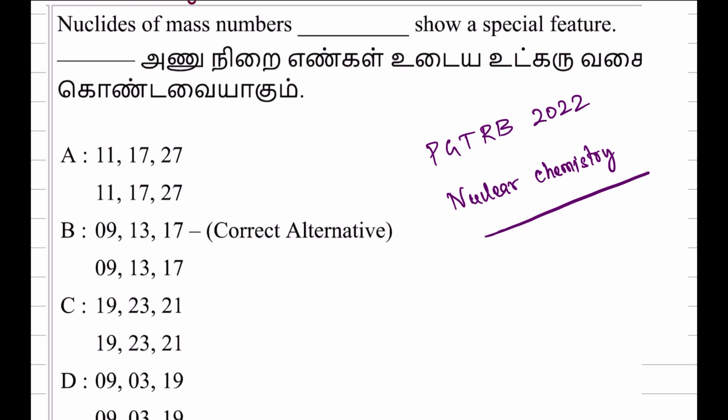In this video, we will solve a question about PGTRP chemistry in 2022. We will ask a question about the nucleides of mass number 9, 13, 17 and their special feature. If you have the correct alternative, you will get the answer.